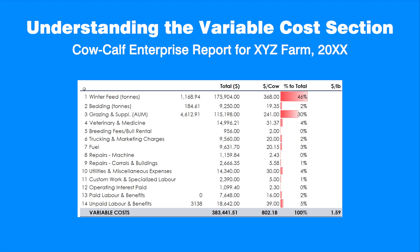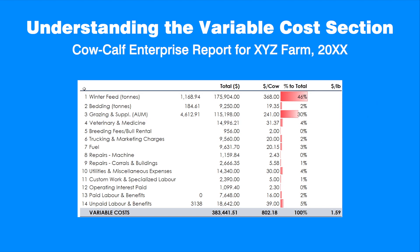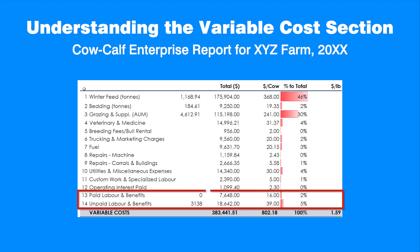Grazing cost is about $241 per cow, or 30% of variable costs. Together, winter feeding, grazing costs, and bedding account for almost 78% of the variable costs and are the major driver of economic efficiency. The second largest source of variable costs is labor, both paid and contributed. In our example, it accounts for about 7%, or $55 per cow.